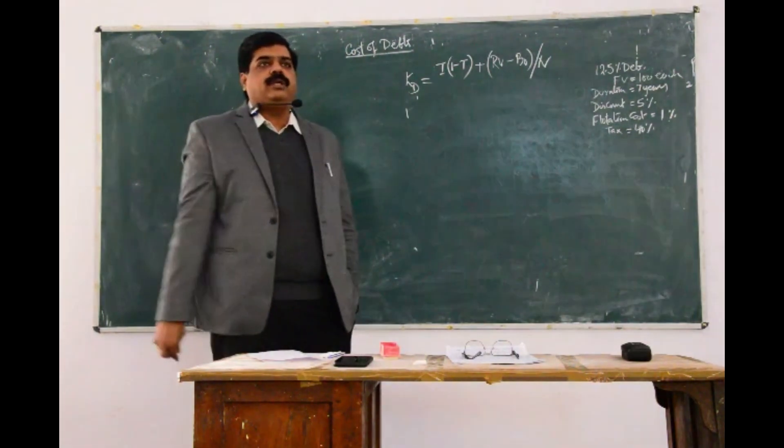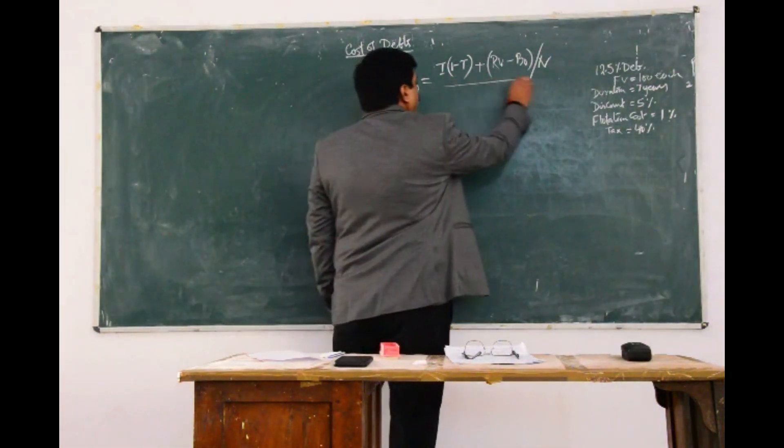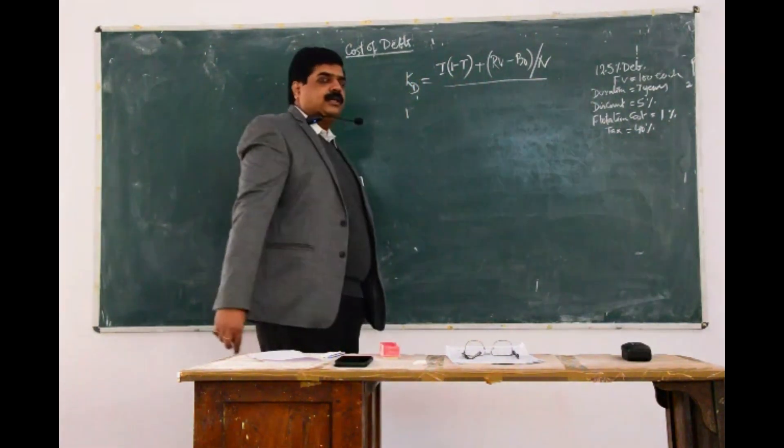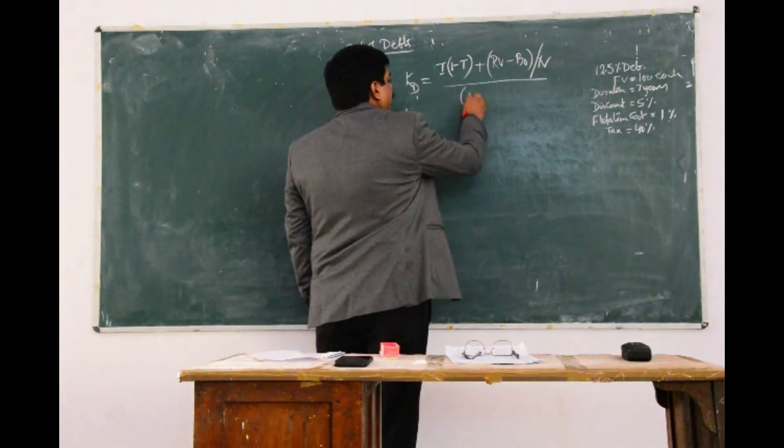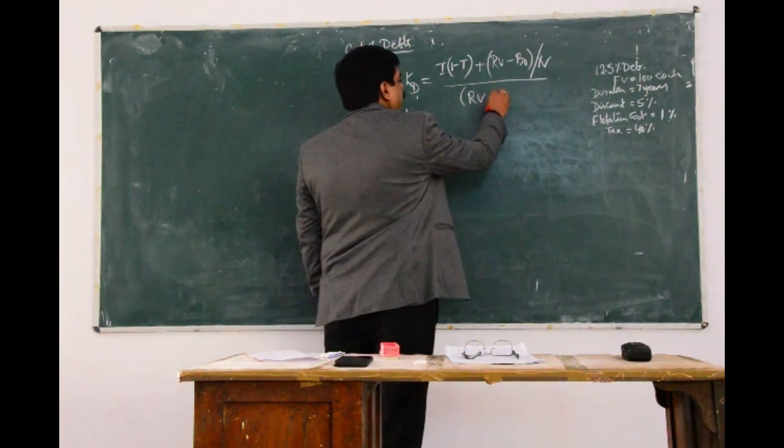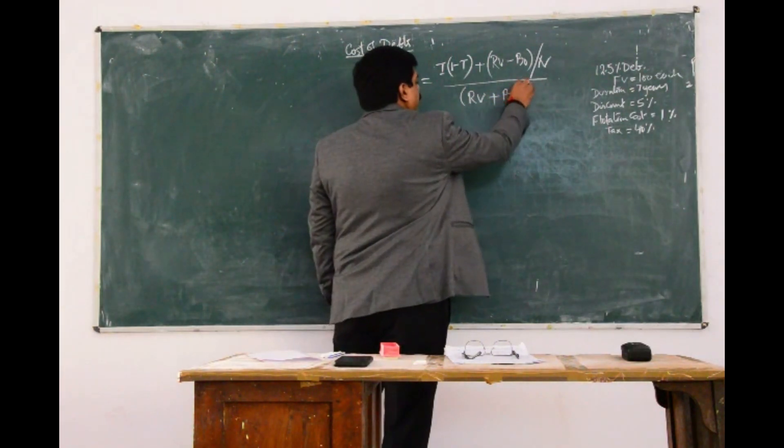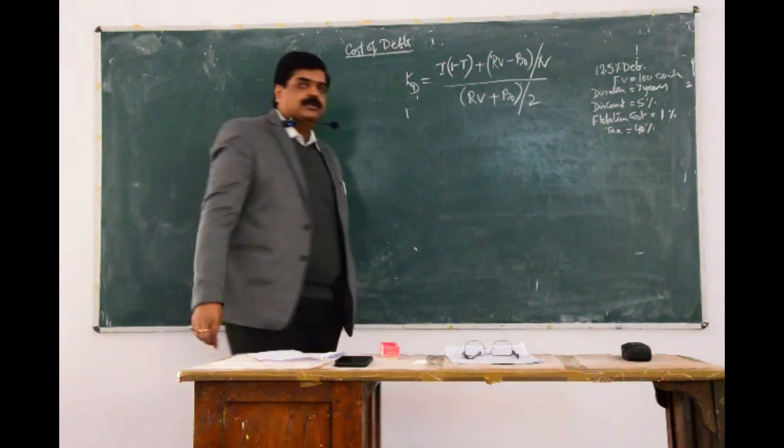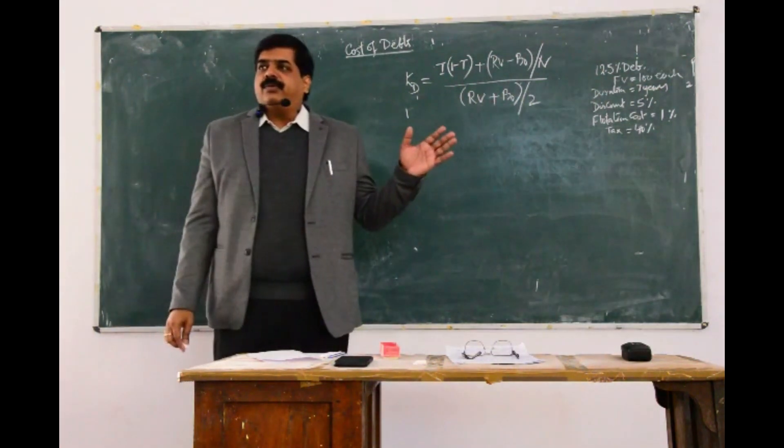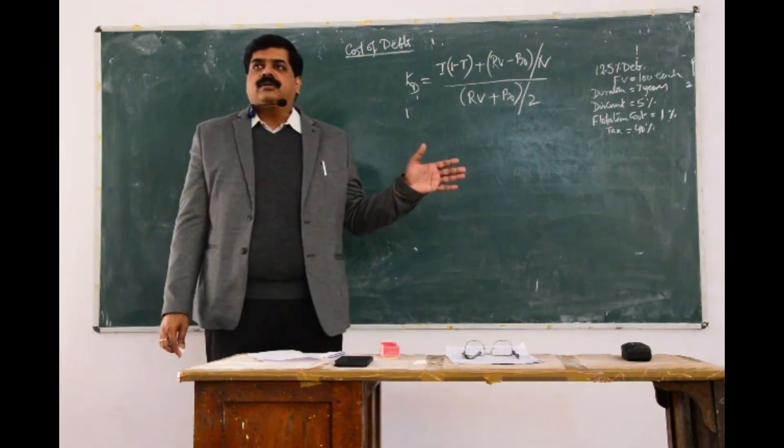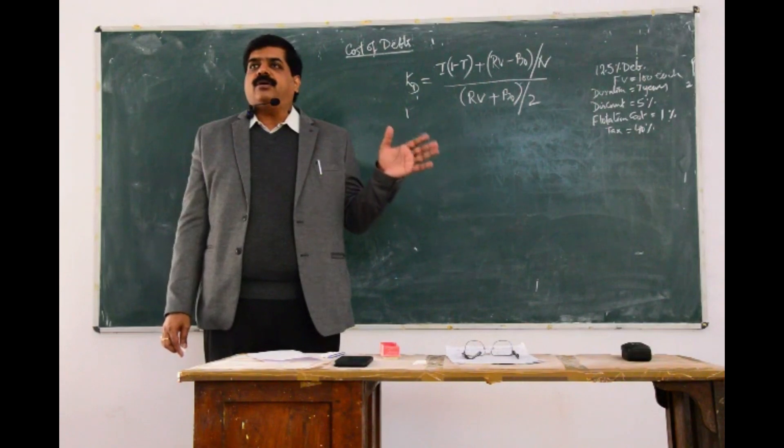Plus redemption value minus whatever debt you have taken, and the whole divided by N, and the whole divided by redemption value plus B0, divided by 2. This will be the equation with the help of which you will be able to calculate the cost of debts.